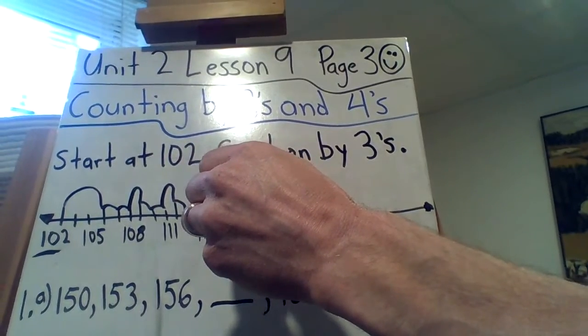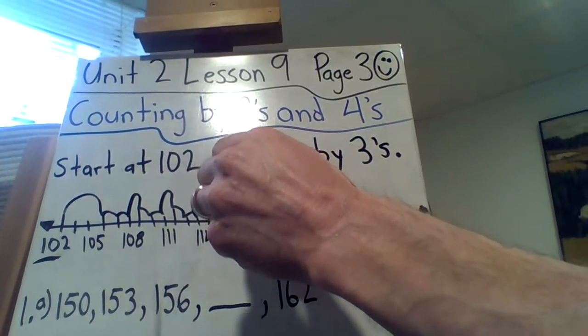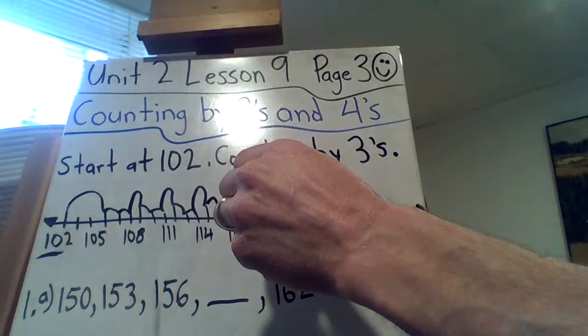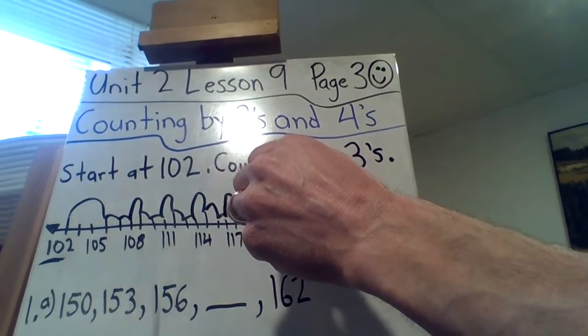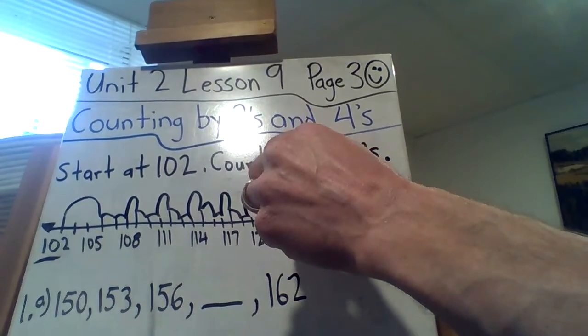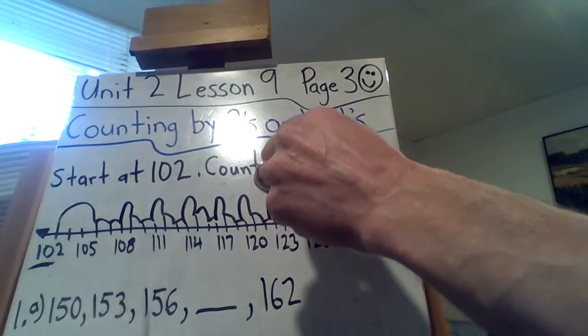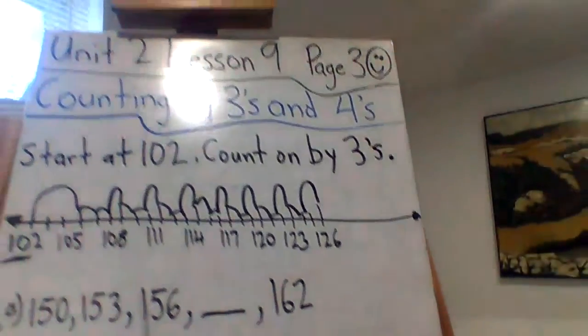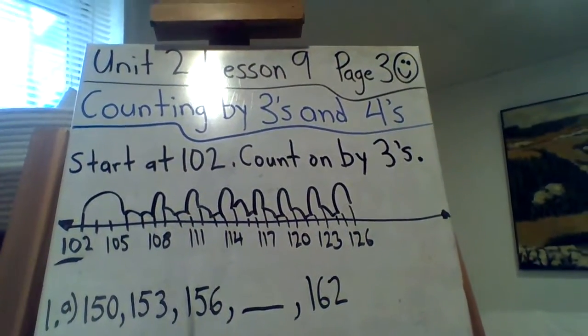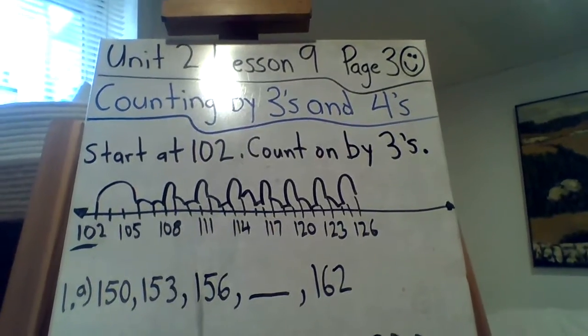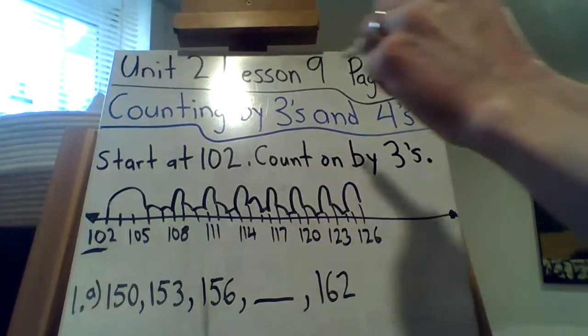Okay? 114, 115, 116, 117, 118, 119, 120, 121, 122, 123, 124, 125, 126. Okay? So, just always counting by 3's in that case. And you can also do it by subtracting, by going backwards on a number line.